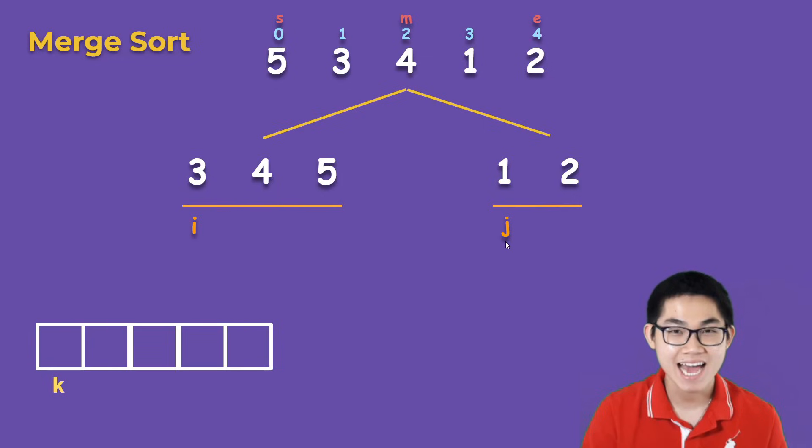Let's pretend this is a game. We ask i and j which one of you has the smaller number, so i has 3, j has 1, right? So of course j has the smaller number, and we put 1 at the beginning of the temporary array. We move j up, we move k up, and then we repeat this process. Hey i and j, which one of you have the smaller number? j has a smaller number, so we put 2 into the array. We move j up, we move k up.